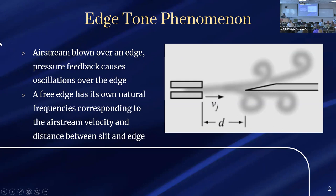The basis of this research is the edge tone phenomenon. This occurs when an airstream is blown through a slit over an edge. When the airstream meets the edge, there is pressure feedback depending on whether it's above or below it, and vortices peel off back onto the original airstream. This pushes it towards the opposite side of the edge, producing a perpetual oscillation. This produces the frequency called the edge tone, which has its own natural frequencies and harmonics corresponding to airstream velocity and the distance between the slit and the edge.